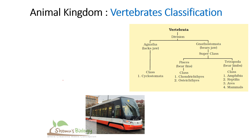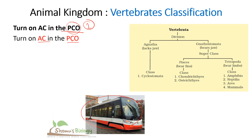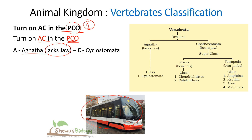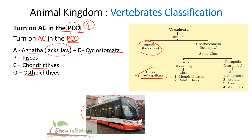Now let's move to vertebrate classification. To answer vertebrate classification questions, recall the sentence: 'Turn on AC in the PCO.' A PCO is a public telephone booth. AC and PCO are the key words: A stands for Agnatha (jaw-lacking fish) and C for Cyclostomata, one class under Agnatha. Then PCO: P for Pisces, C for Chondrichthyes (cartilaginous fish), and O for Osteichthyes (bony fish).